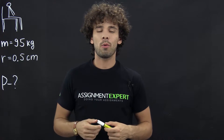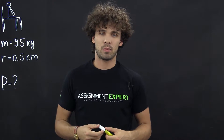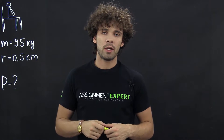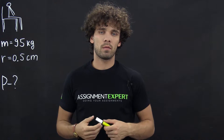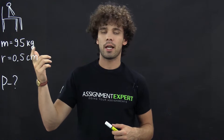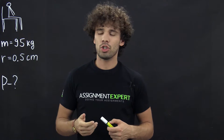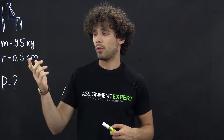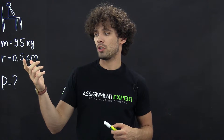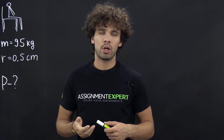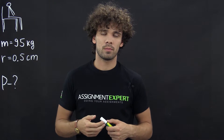Hi guys! You are watching Assignment Expert and today we have the following task for you. A man sits on a chair with his legs off the floor. The mass of the man with the chair is 95 kilograms, and the chair has four legs — they are circular and the radius of each is 0.5 centimeters. What is the pressure experienced by the surface?